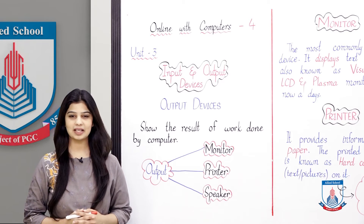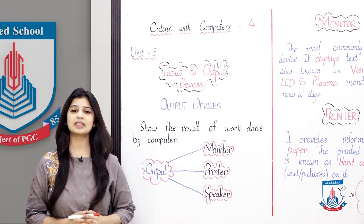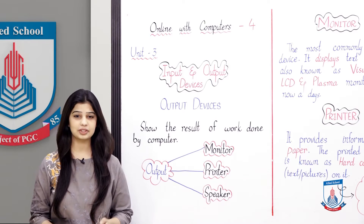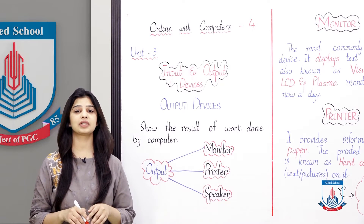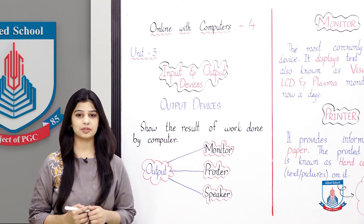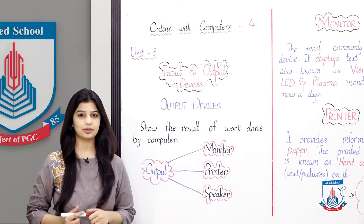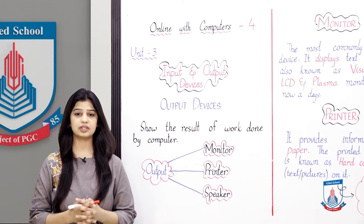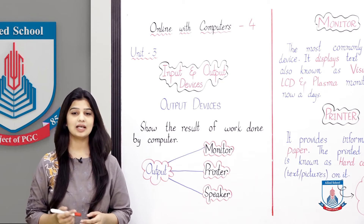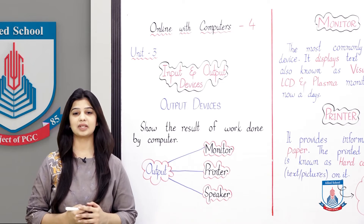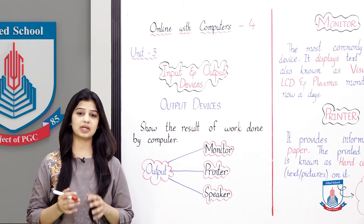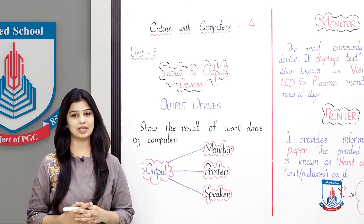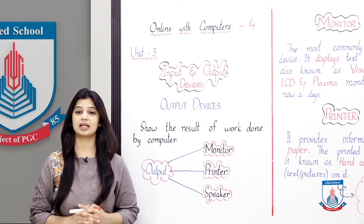We have studied these 3 steps. First of all, we need to give the input. After that, the input is processed. Input is the data and instructions which we give to the computer to work. When the computer works on our data and instructions, we call that processing.